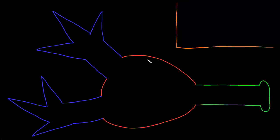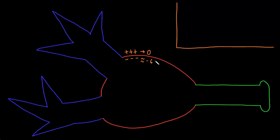Recall that resting neurons — neurons that aren't receiving any input — usually have a stable charge separation across the entire membrane, where there are a layer of positively charged ions, also called cations, on the outside of the neuron membrane, and a layer of negatively charged ions, also called anions, on the inside. The outside is called 0 as a reference, and the resting membrane potential of neurons is often around negative 60 millivolts.